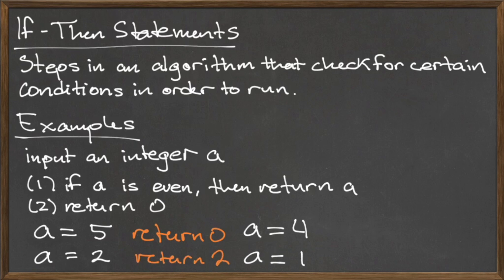Try running this algorithm again with the inputs a equals four and a equals one, and record your output. For the input a equals four, you should have gotten the output of four, and for the input a equals one, the output should be zero.